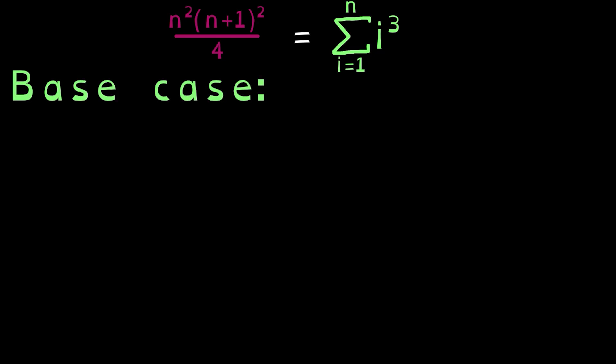First, let's consider our base case. If n equals 1, then the sum becomes 1, and the formula becomes 1 squared times 1 plus 1 squared over 4, which is 1. Thus, the base case works.